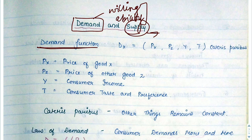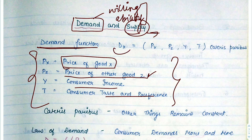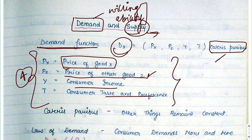The demand function consists of four things: the price of good X, the price of other goods, the consumer's income, and their tastes and preferences. Ceteris paribus means all other things remain constant — for example, inflation or deflation in the market would be kept constant while we consider these variables.